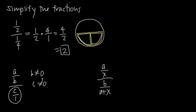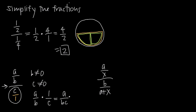Once we've indicated that our denominators cannot equal 0, we apply the same math. We take the fraction in the numerator, a over b, then instead of dividing, we multiply and flip c over 1 upside down to get 1 over c. Multiplying across the numerators gives a times 1, which is a. Multiplying across the denominators gives b times c, which is bc. We can't simplify this any further, so a over bc is our final answer.